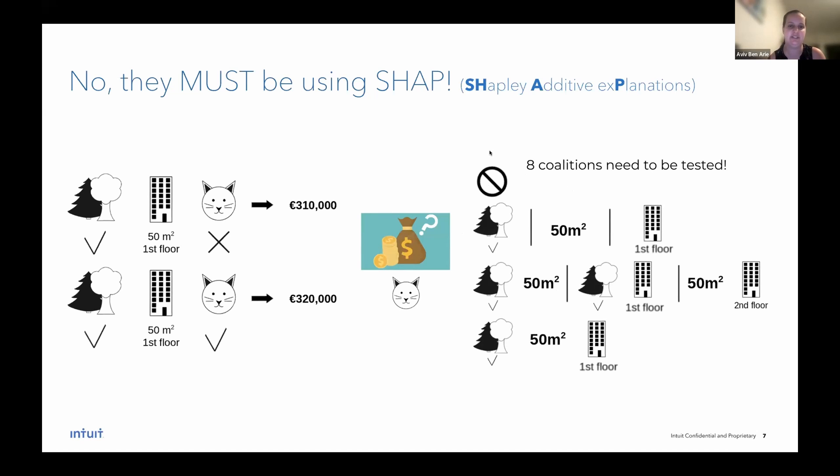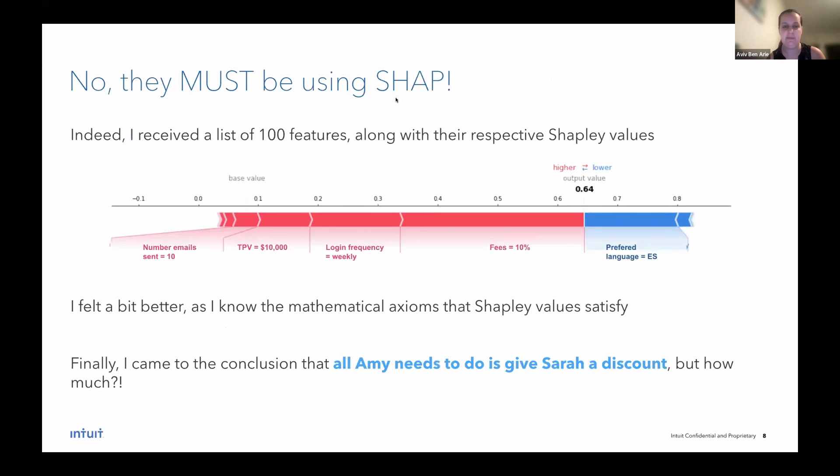So I won't go deeper into the theory. This is just intuition, and this is not the actual main topic of the talk. But if you would like to read more, you can Google SHAP, and there's the great paper which introduced the concept and many more material. So SHAP is currently one of the most popular explainability methods used in the industry by data scientists. And indeed, I received from the data science team a list of 100 features along with the respective shapely values, meaning the weight or the shapely value or the marginal contribution for each of the 100 model features. And indeed, I can see that fees is at the top of the list. It contributes the most towards the final prediction. And this made me feel a little bit better because I know all about the mathematical axioms that Shapely values satisfy. So that convinced me, and finally I came to the conclusion that I need to tell Amy that all she needs to do is give Sarah a discount and lower her fees, and then this will make Sarah be a happy customer and not churn.